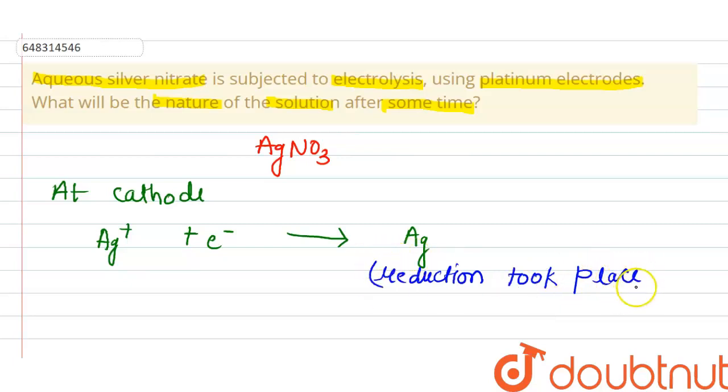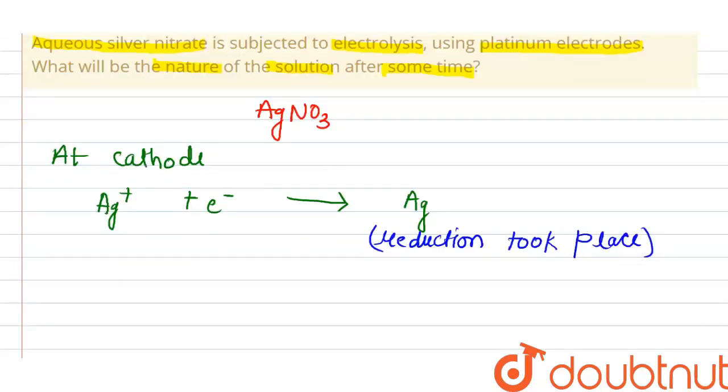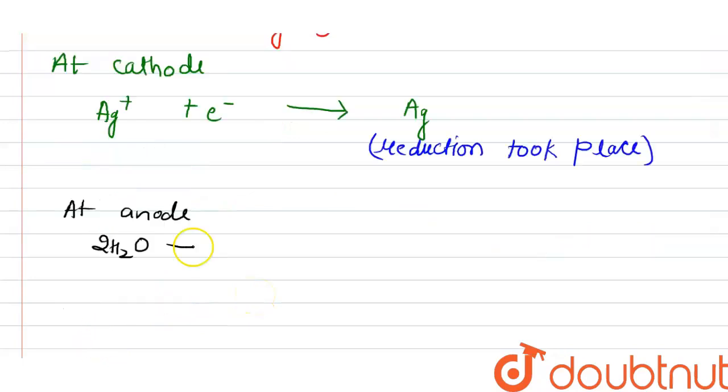Next, at anode, the reaction which takes place is 2H2O forms 4e- plus O2 plus 4H+ ions. We can say that at anode, oxidation took place.